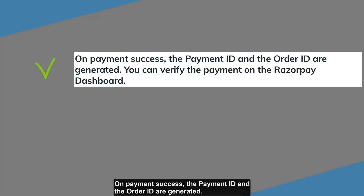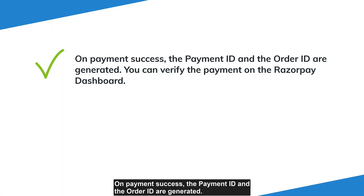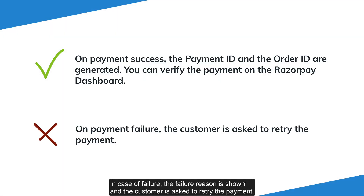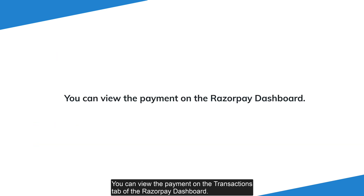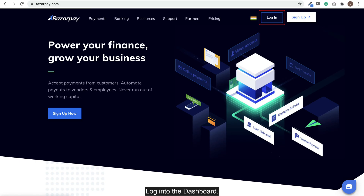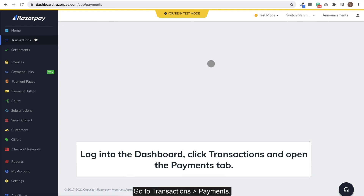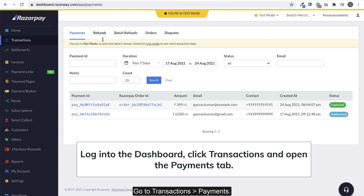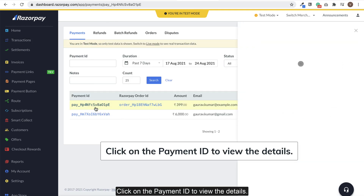On payment success, the payment ID and order ID are generated. In case of failure, the failure reason is shown and the customer is asked to retry the payment. You can view the payment on the transaction tab of the Razorpay dashboard. Login to the dashboard, go to Transactions > Payments, and click on the payment ID to view the details.